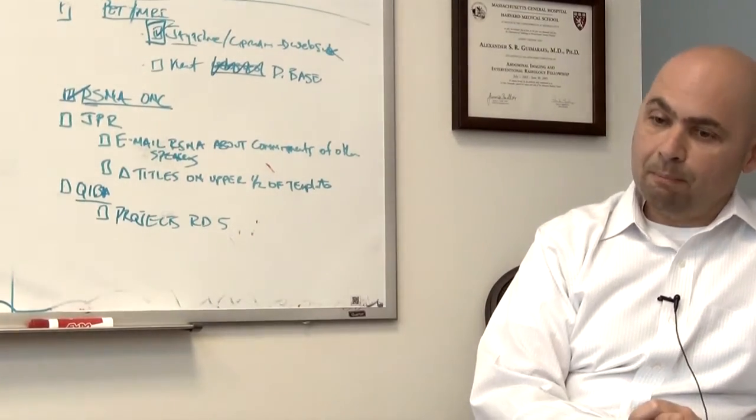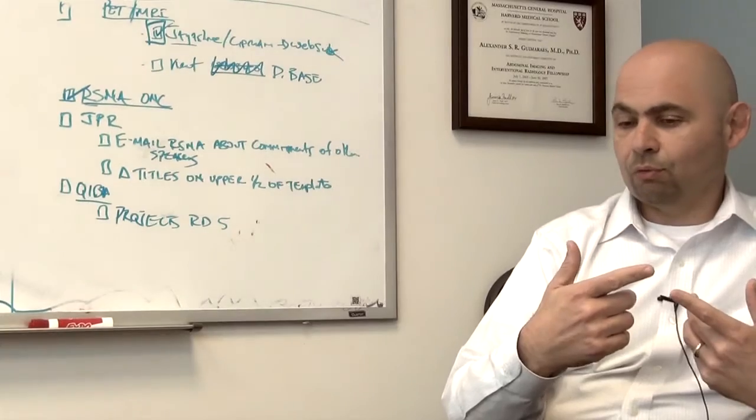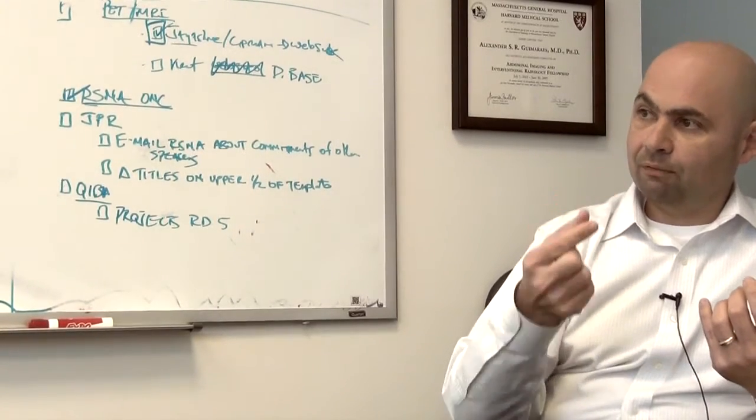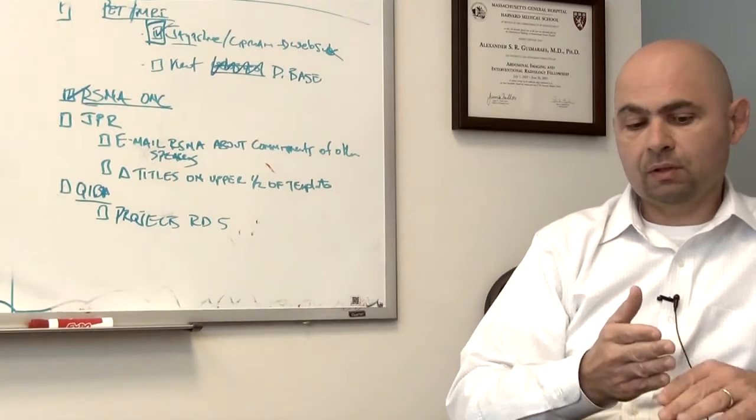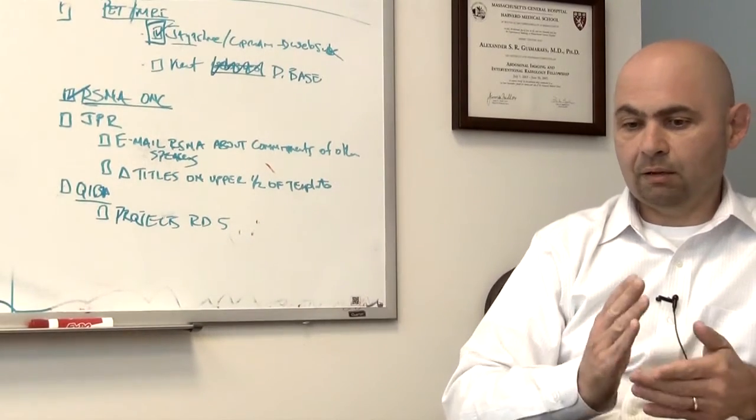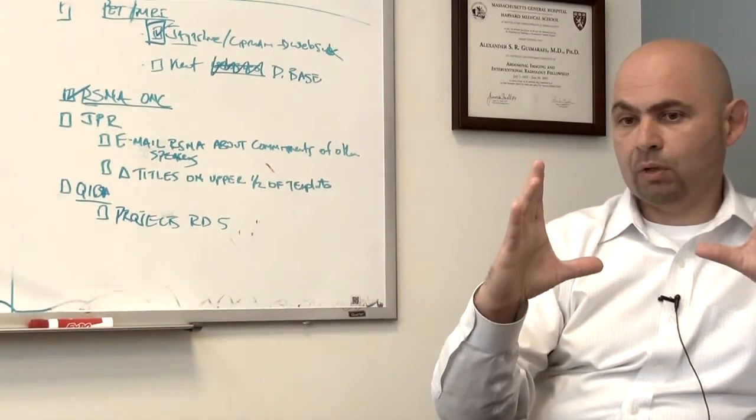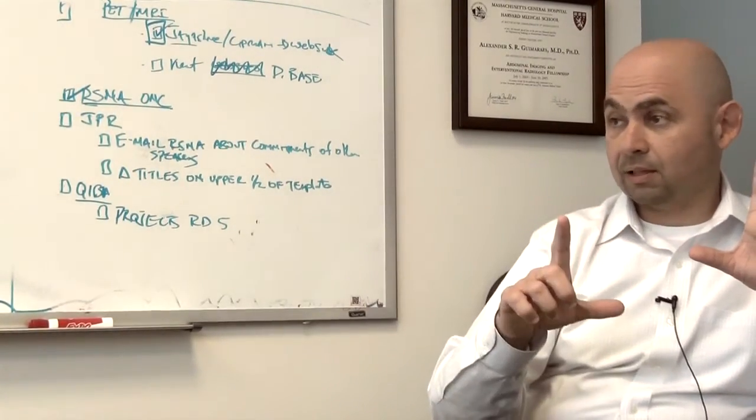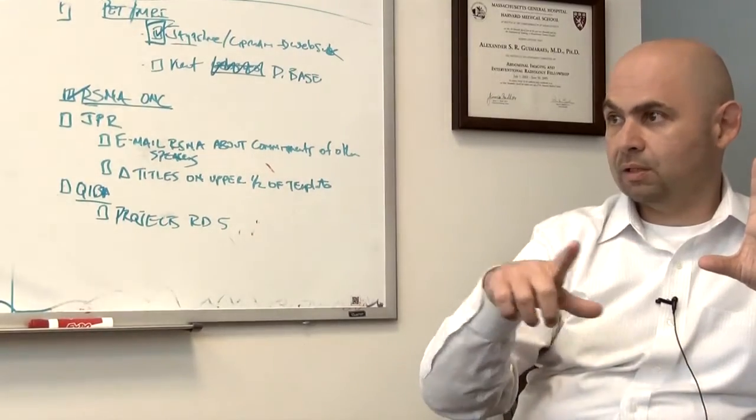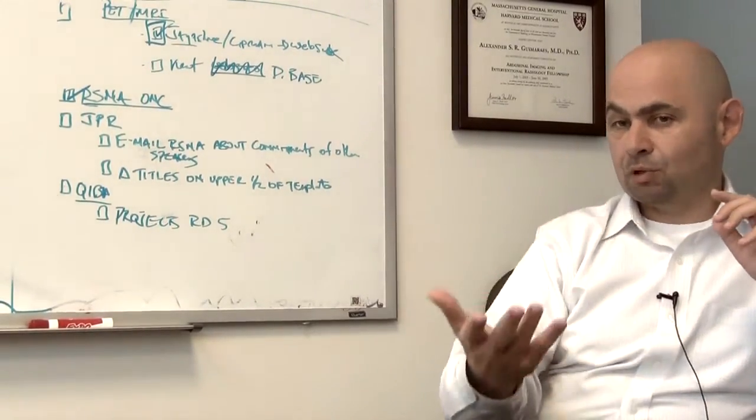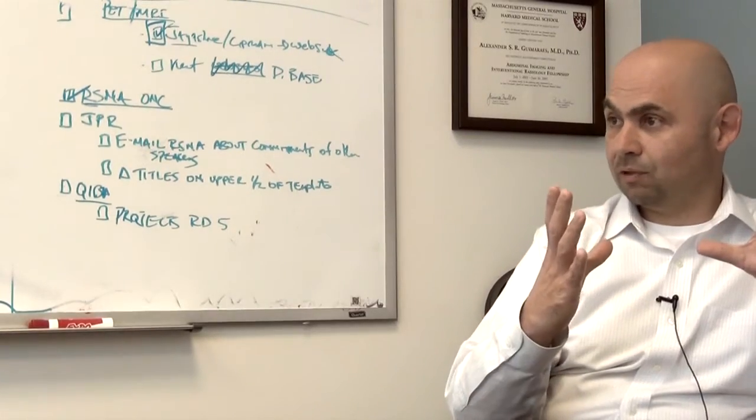But all of it depends, and it's all related to the amount of spins that you have within that voxel. So a pixel is one plane divided into x number of coordinates. So if you have 20 centimeters on each axis and you have 256 points on each axis, you have 256 times 256 pixels in that matrix.